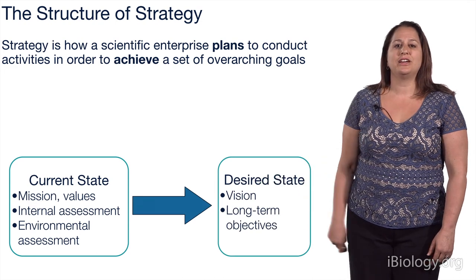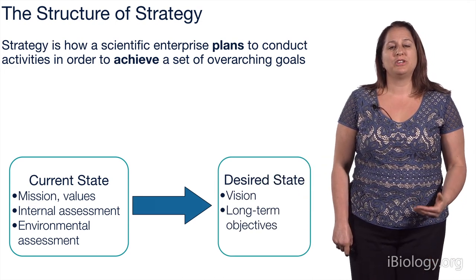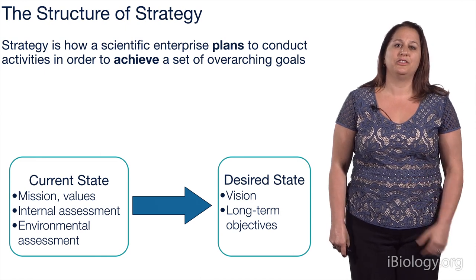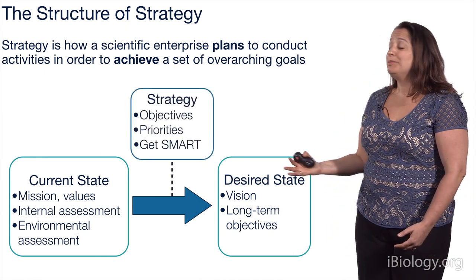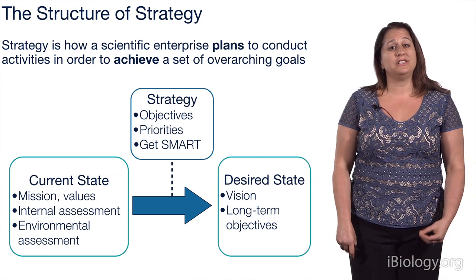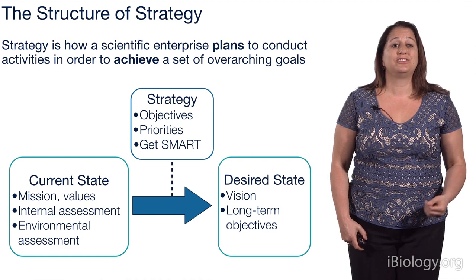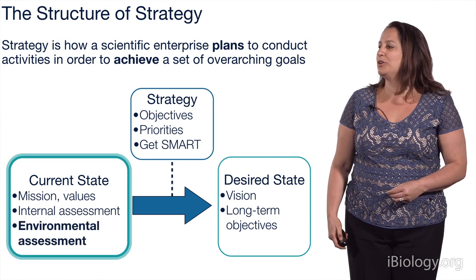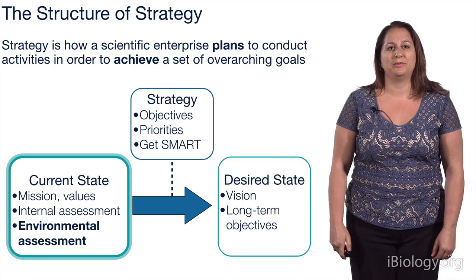Then they'll think about their desired state — what's their vision and what are their long-term objectives, or put another way, where do they want to be at the end of this strategy period. The strategy is then simply a set of objectives that are prioritized and written in detailed form, telling the enterprise how to get from their current state to their desired state. Today we're going to focus on tools that help with that environmental assessment.